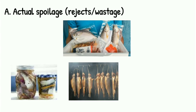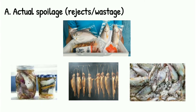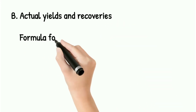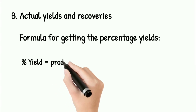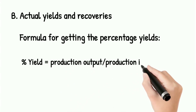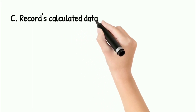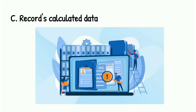In smoked fish, the intestinal organ is the reject. Lastly, in fermented fish and other fishery products, small seashells, small stones, and seaweeds are the spoilage. Then, the actual yields and recoveries. The formula for getting the percentage yield is: Percentage yield equals production output divided by production input, multiplied by 100%. Lastly, records of calculated data — reports and records based on data gathered and computed on production output, input, actual spoilage, rejects, actual yields, or recoveries are kept for documentation purposes. This will be the basis for determining the progress of whatever products are being processed.